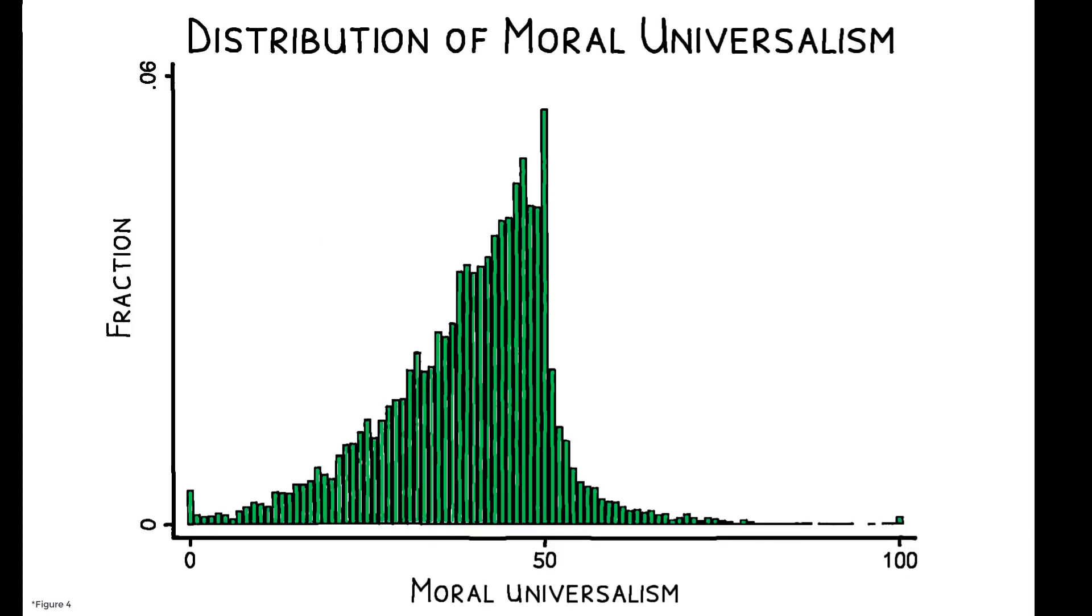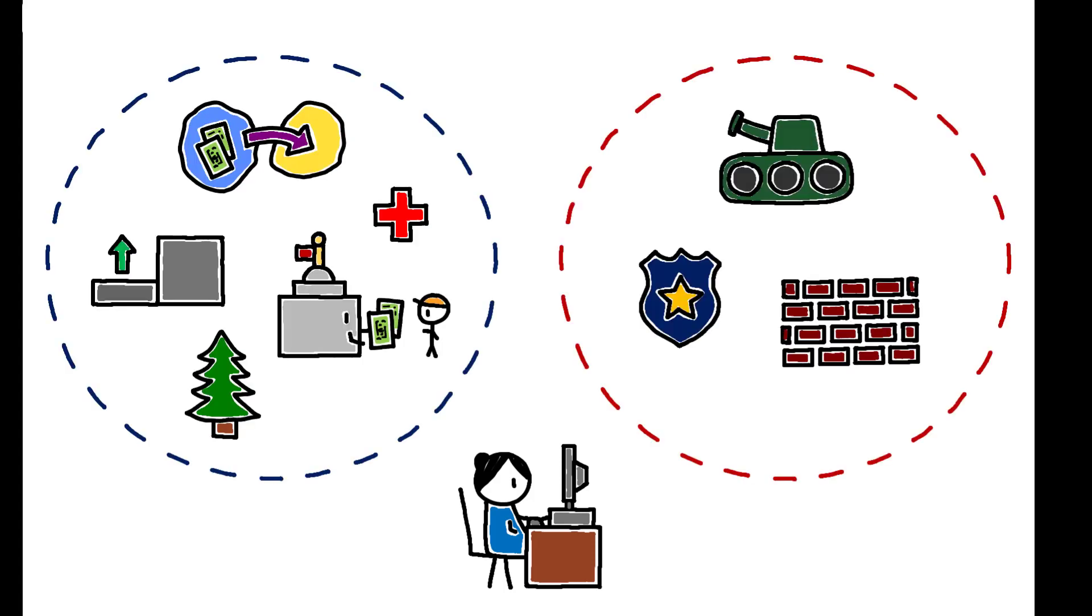This figure shows the distribution of moral universalism as measured in the surveys. The x-axis reflects the amount out of 100 allocated to random strangers, so universalism is increasing in this direction. There is substantial heterogeneity in respondents' degree of universalism, and in addition, their policy views are strongly clustered in the usual way.